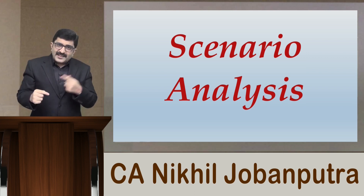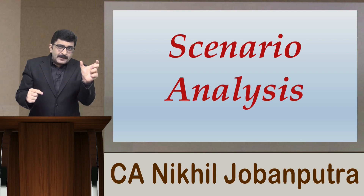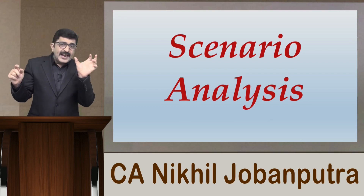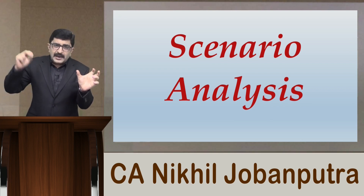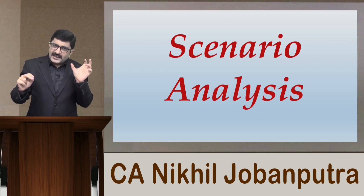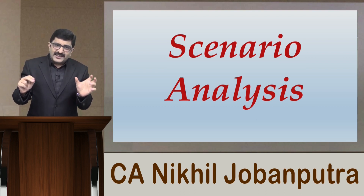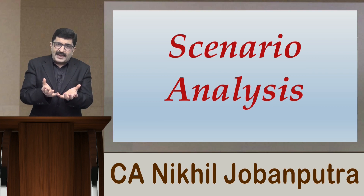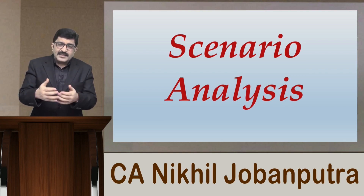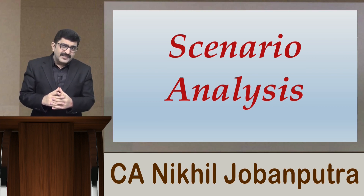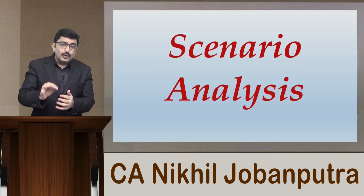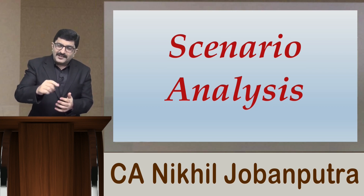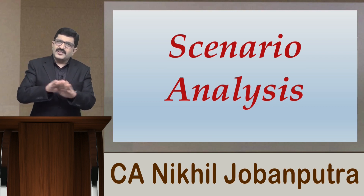At the last stage, you take the NPV at best case scenario multiplied by its respective probability, plus the NPV at most likely case scenario multiplied by its probability, plus the NPV at worst case scenario multiplied by its respective probability. The aggregate of this will be the expected NPV. If that final expected NPV is positive, go ahead with the project; otherwise, reject the project.